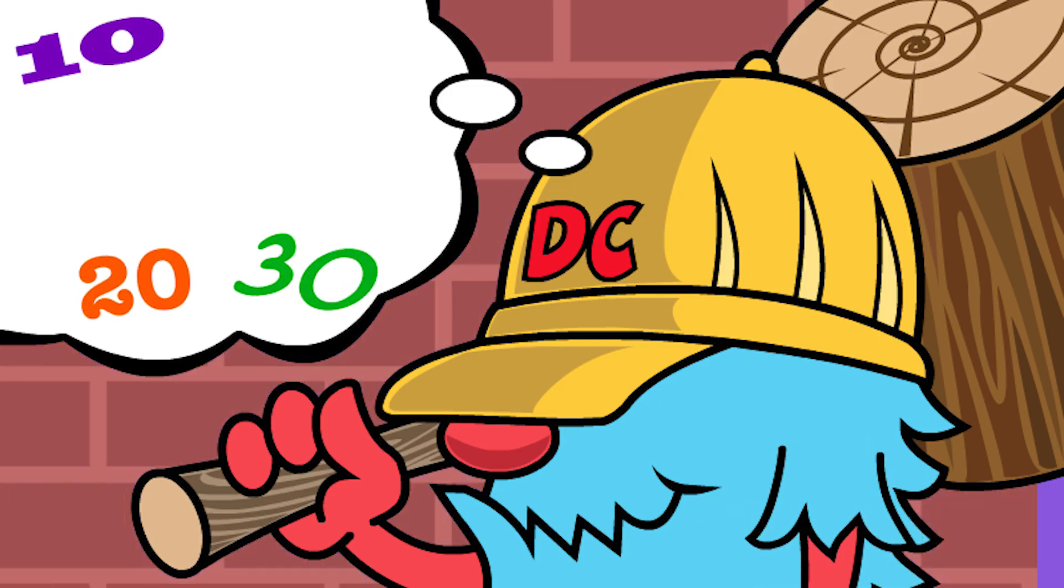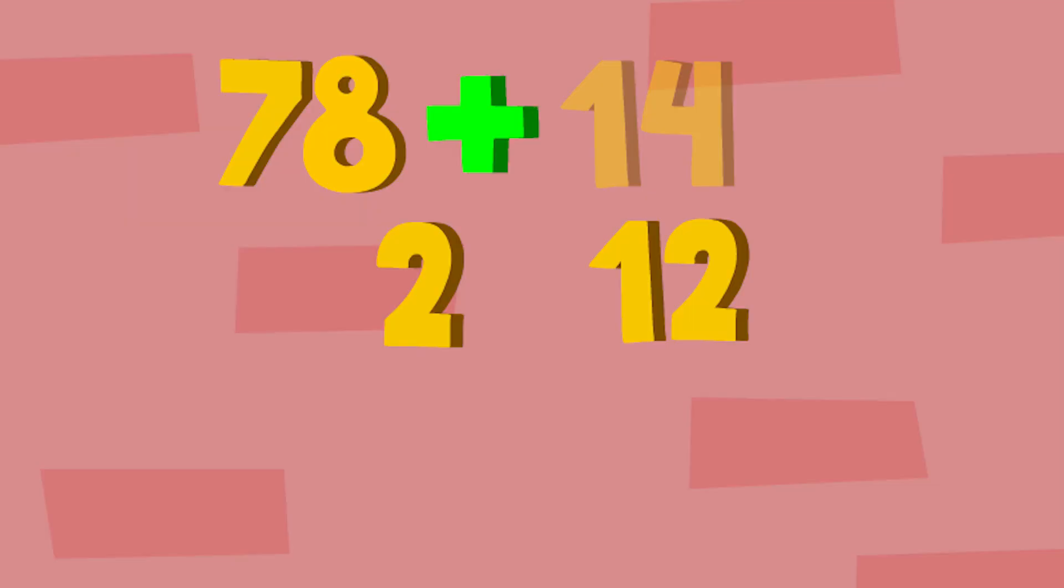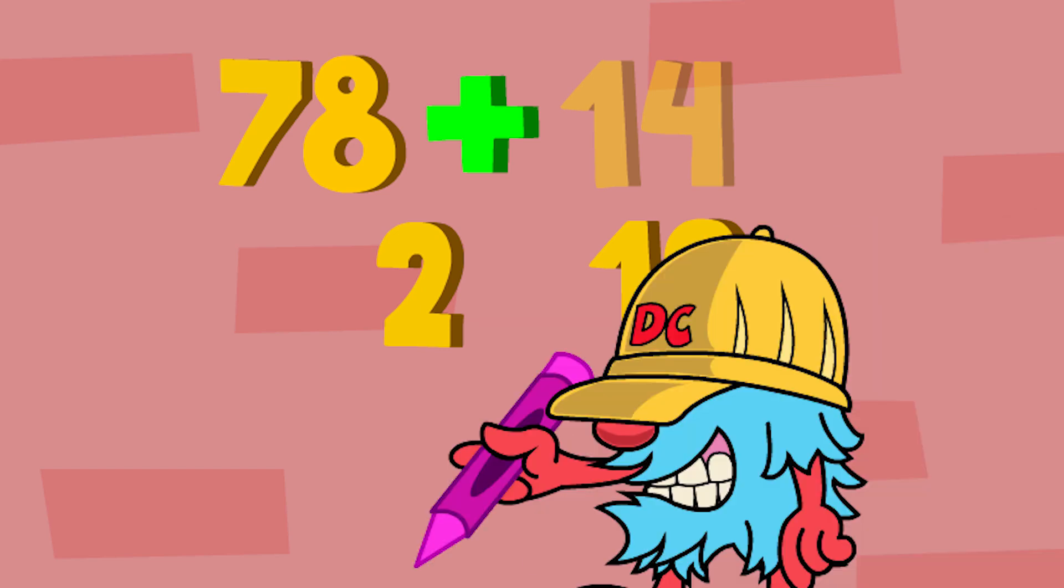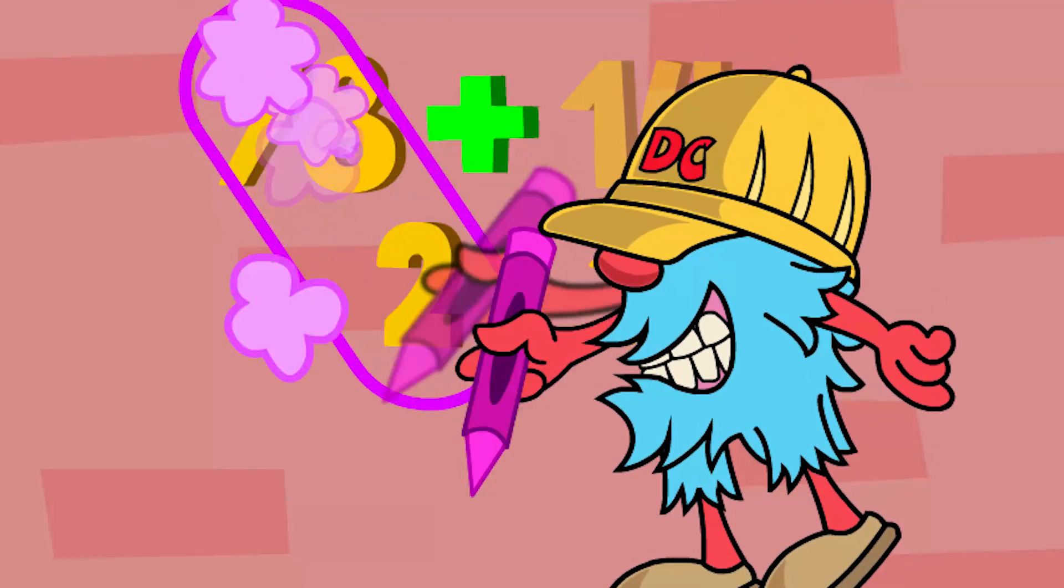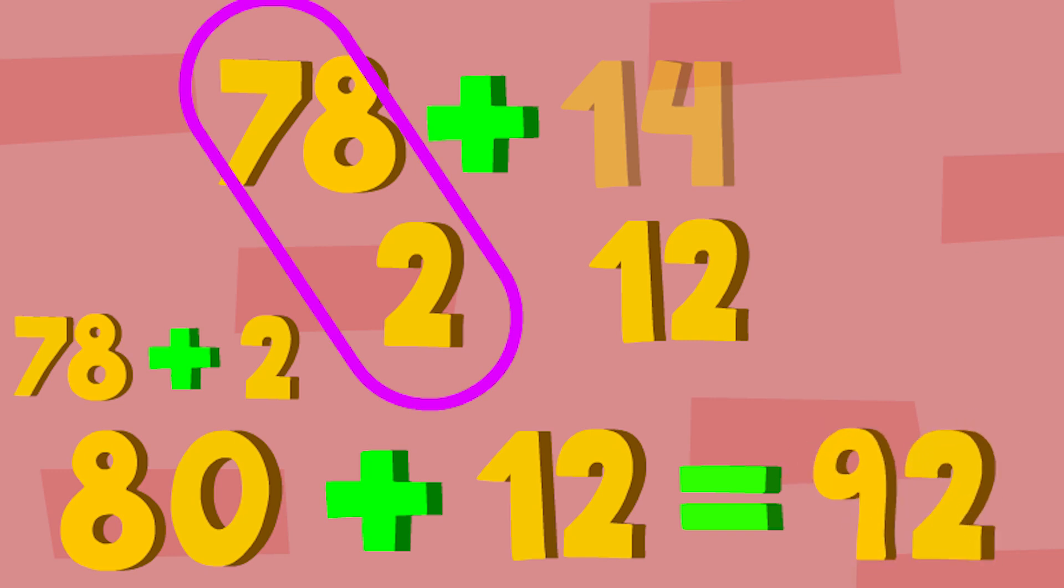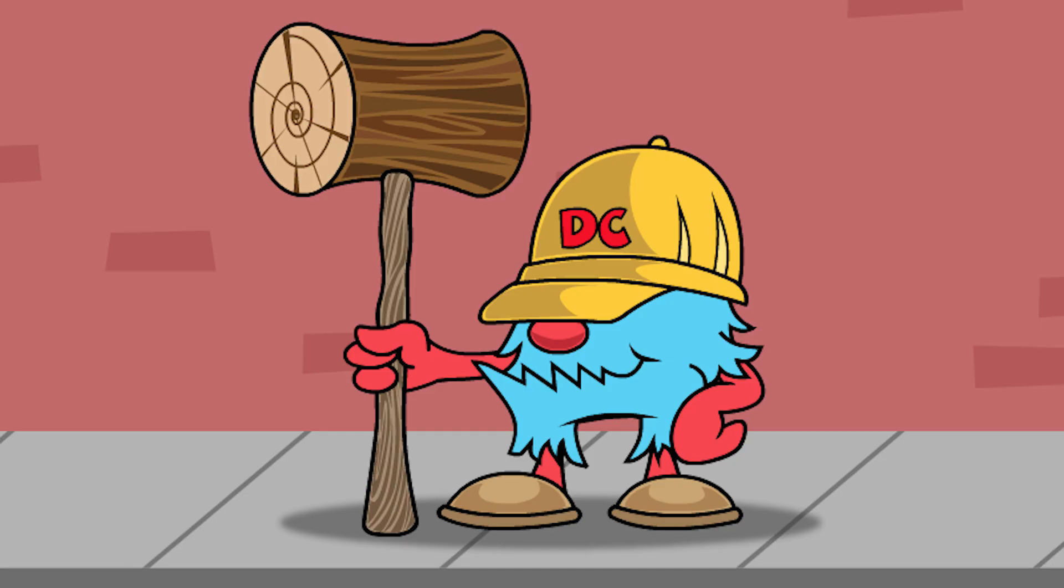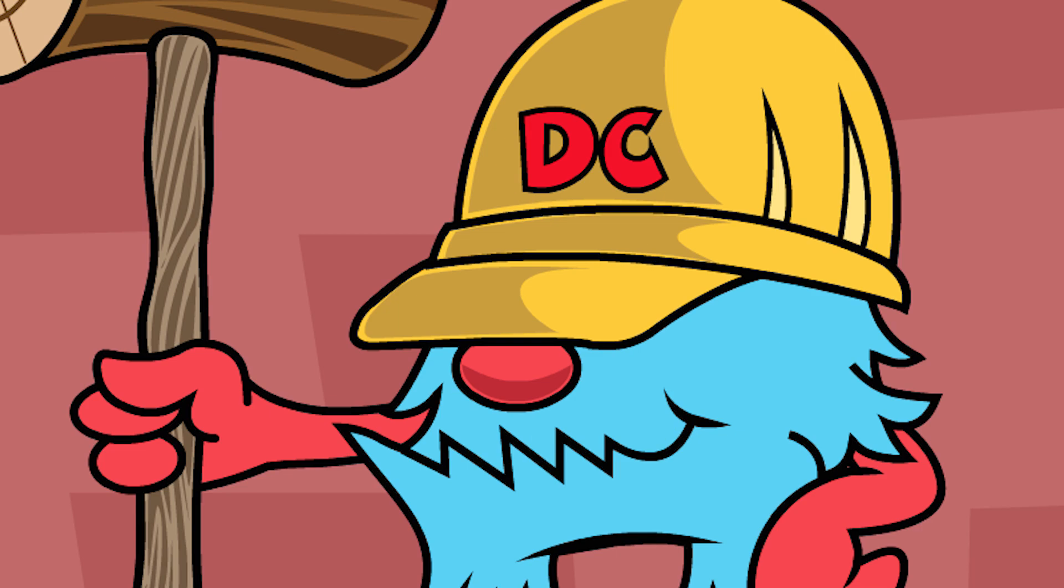I think he's looking at that number 78 and trying to think of what the next friendly number is. D.C. is very excited as he's circling the 78 plus the 2 because 78 plus 2 equals 80. And when you add it to 12, you get 92. D.C. thinks that 80 plus 12 to add is much easier than looking at the math problem 78 plus 14. D.C. is so proud of his work.